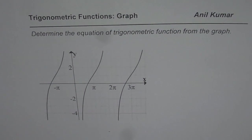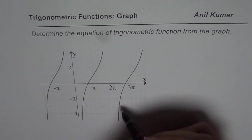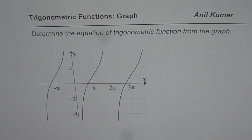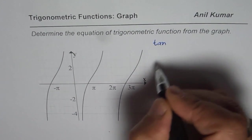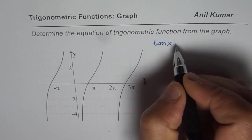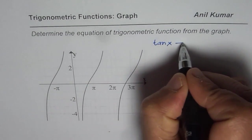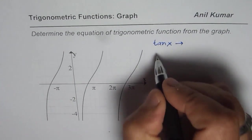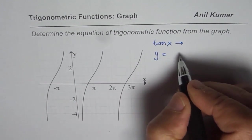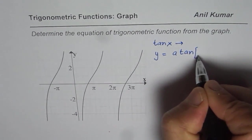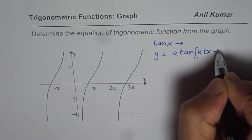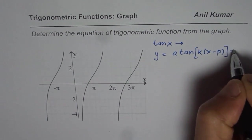Now, whenever you are given a tan function, since it is always increasing, it is a tan graph. So in general, we could write the equation as tan x has been transformed as y equals to A times tan of k times x minus p plus q.